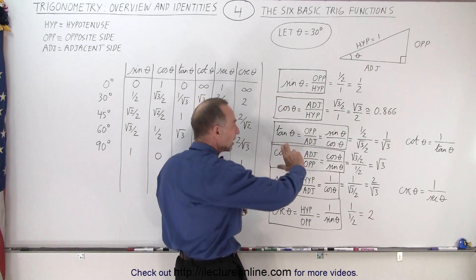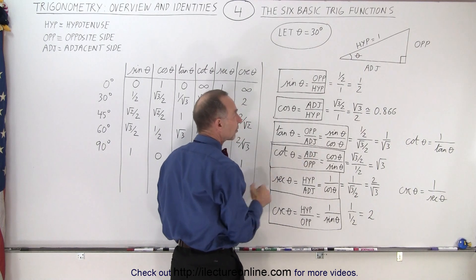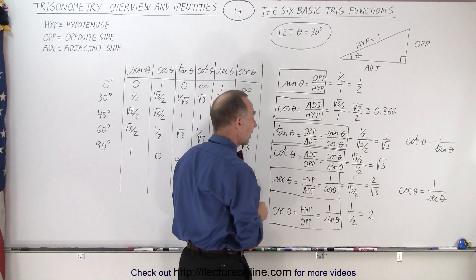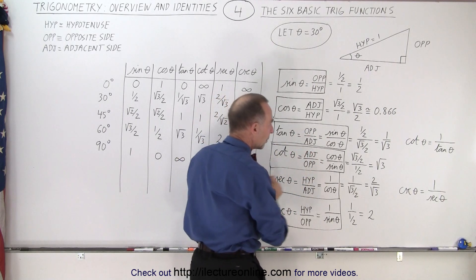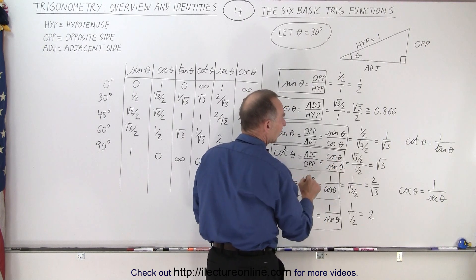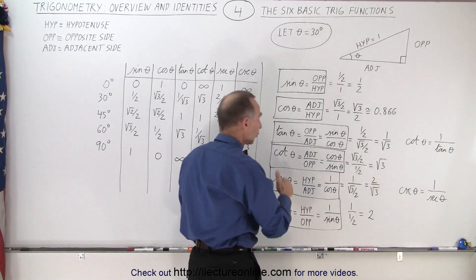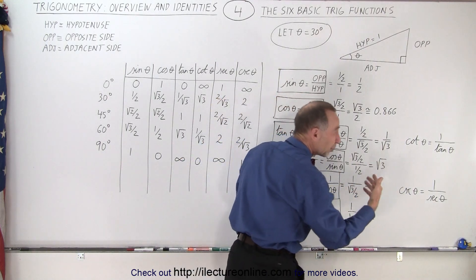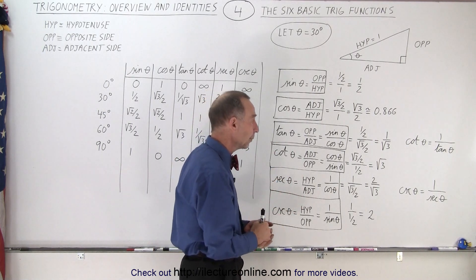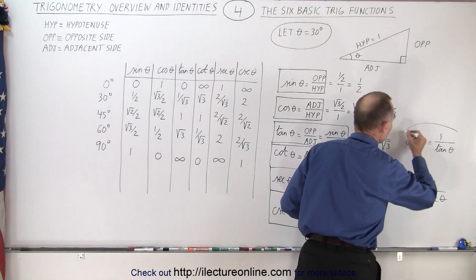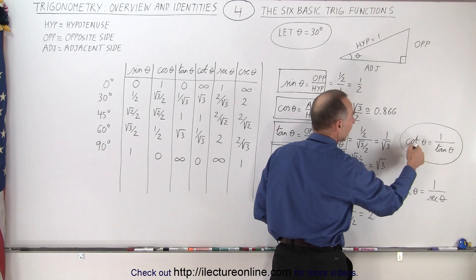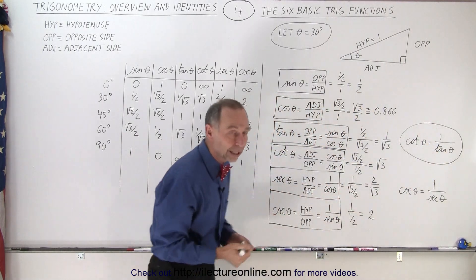The cotangent of theta is defined as the inverse of the tangent — it's the ratio of the adjacent side divided by the opposite side, which is the same as the cosine divided by the sine. The cosine of theta at 30 degrees is the square root of three over two, and the sine of theta is one-half, so that ratio ends up being the square root of three. The cotangent of 30 degrees equals the square root of three, which is 1.732 — bigger than one. Keep in mind that the cotangent of theta is 1 over the tangent of theta, and vice versa.